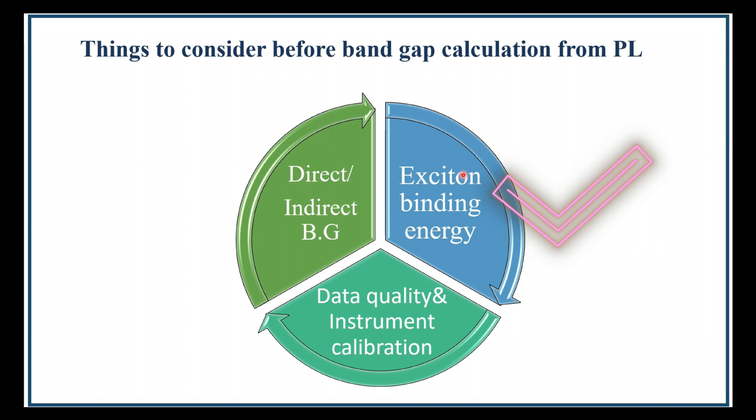Hence, the second one is exciton binding energy. If there is a presence of excitons, PL may not exactly match the bandgap energy. In this case, subtracting the exciton binding energy from the PL peak energy can provide a more accurate result. Third one is data quality and calibration of the instrument. Correct peak identification results only from very good data, and also without calibration, the judgment of the PL maxima will be wrong. So by keeping all these things in mind, you can calculate the bandgap energy from your PL.